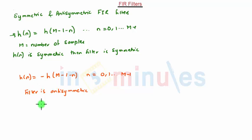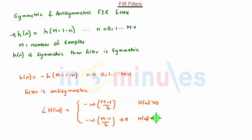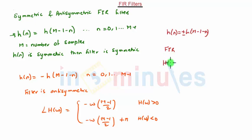The phase of the filter, i.e. angle H, is given by -ω(M-1)/2 when H(ω) is greater than 0, and -ω(M-1)/2 + π when H(ω) is less than 0. From this we can derive that the condition for linear phase is h(n) = ±h(M-1-n).